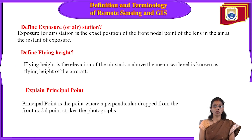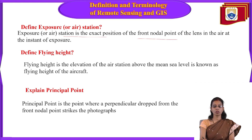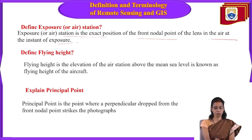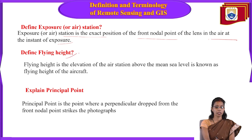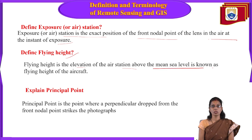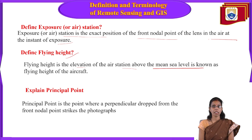Define exposure or air station: the exposure station is the exact position of the front nodal point of the lens in the air at the instant of exposure. Flying height is the elevation of the air station above mean sea level, also known as the flying height of the aircraft.